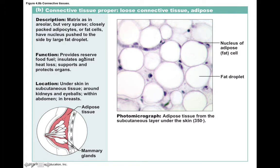Adipose is pretty widely distributed around the body. It functions in insulation, protection, cushioning, and energy storage because it stores lipids. You find it just beneath the skin, around your kidneys to support their position, around your eyeballs, around your abdominal organs, and it is also the major filler material within the breast itself.